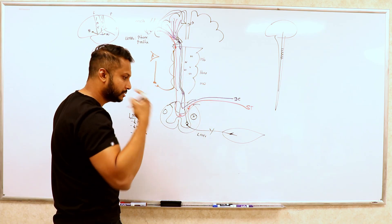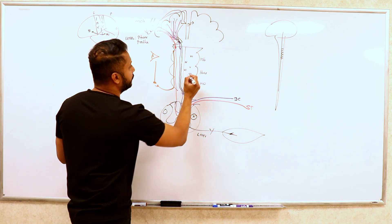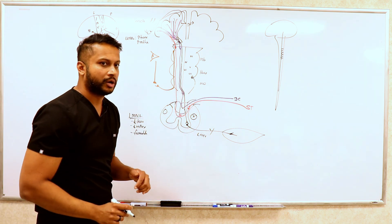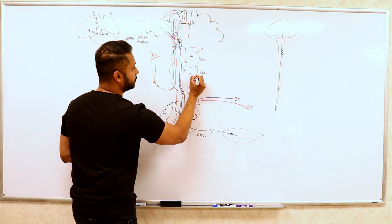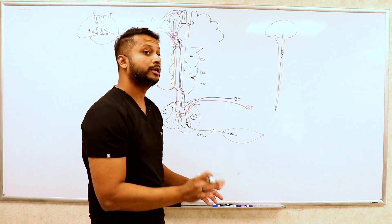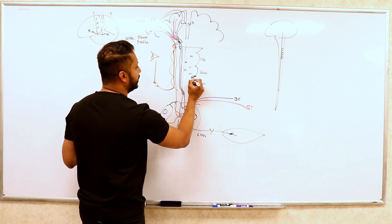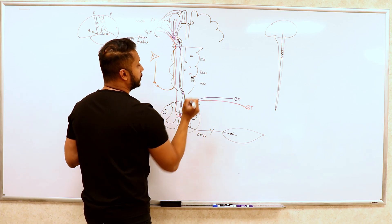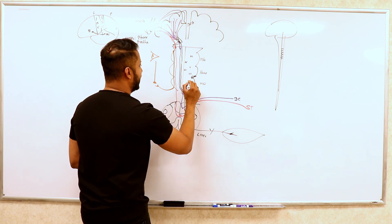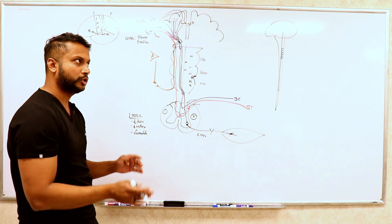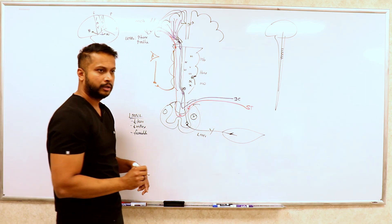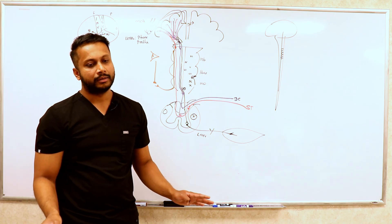Cranial nerve eight is purely sensory — the vestibulocochlear nerve — and importantly the vestibular portion dips into the medulla oblongata. In the medulla oblongata you have nine, ten, and twelve. Nine and ten are mixed — they supply the muscles you use to swallow. Twelve supplies your tongue and is purely motor, so it goes medial. Once you have this arrangement, you know exactly where to localize a brainstem stroke.